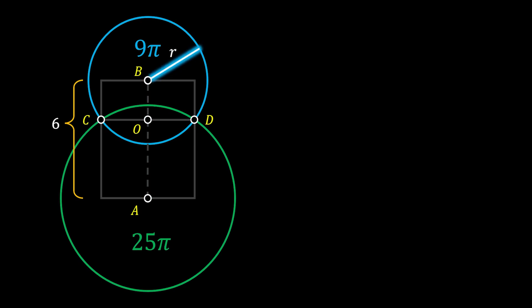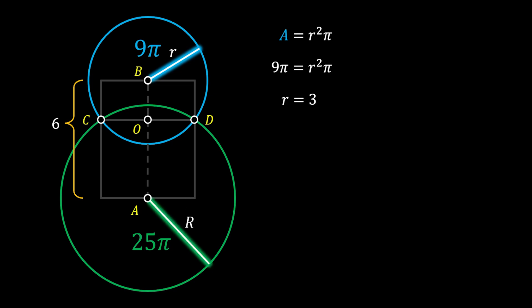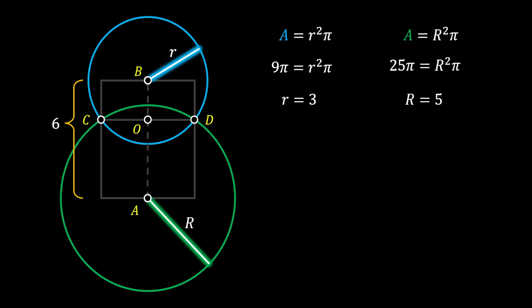Now let's focus on our two circles. Let's label the radius of our small circle as r, which means the area of this circle is equal to r²π. Since we know that the area is equal to 9π, we can substitute that and get that the radius of this circle is equal to 3. We can do the same for our bigger circle, labeling its radius as capital R, and after substituting the area of 25π we get that the radius of this circle is equal to 5.